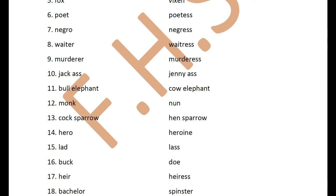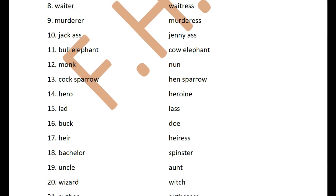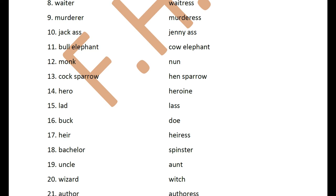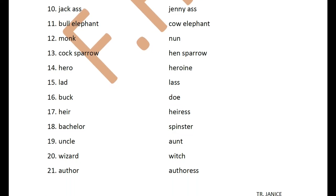Bull elephant / cow elephant. Monk / nun. Cock sparrow / hen sparrow. Hero / heroine. Lad / lass. Buck / doe — doe is a female deer. Generally if you are just talking of deer, you say deer. But when you want to specify male or female, you say buck for male and doe for female. Common gender would be deer.